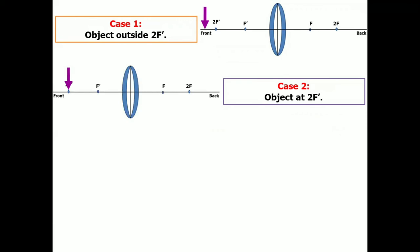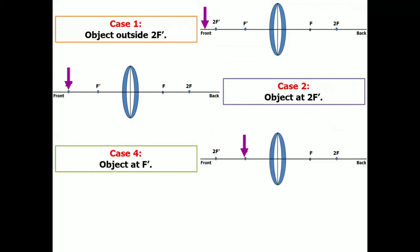The third case was already given as an example. So let's proceed to case number four. Object at F. And it looks like this. And lastly, our fifth case is we are placing the object beyond F. And it appears like this.